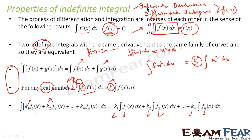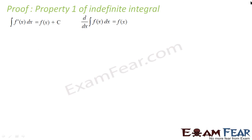So to summarize: the first property says integrating a derivative or differentiating an integral both give you f. The second says two indefinite integrals with the same derivative represent the same family of curves and are equivalent. The third says you can split the integral of f plus g into the integral of f plus the integral of g. The fourth says a constant real number k inside the integral can be taken outside. Now let's prove the first property.